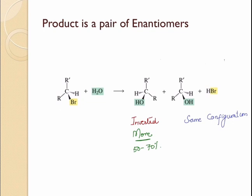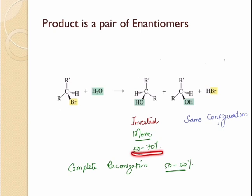If the reaction leads to equal amounts of both stereoisomers, then it is going to be complete racemization. But if it leads to 50 to 70% of one product, then it is going to be called partial racemization.